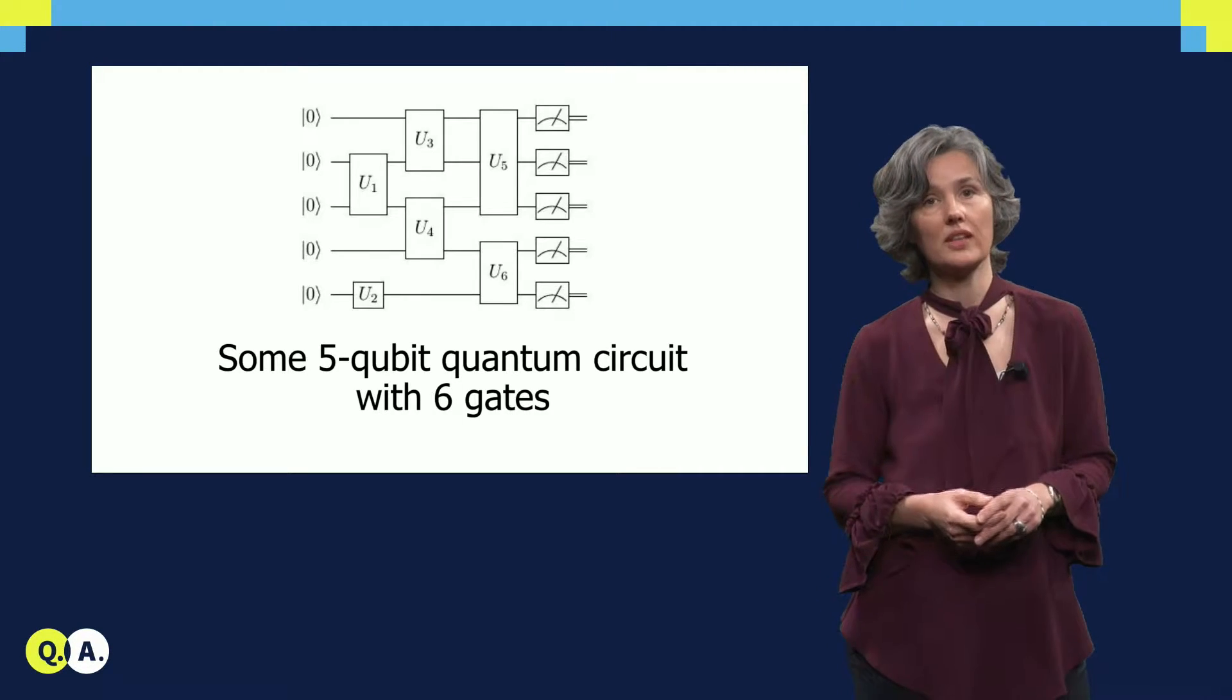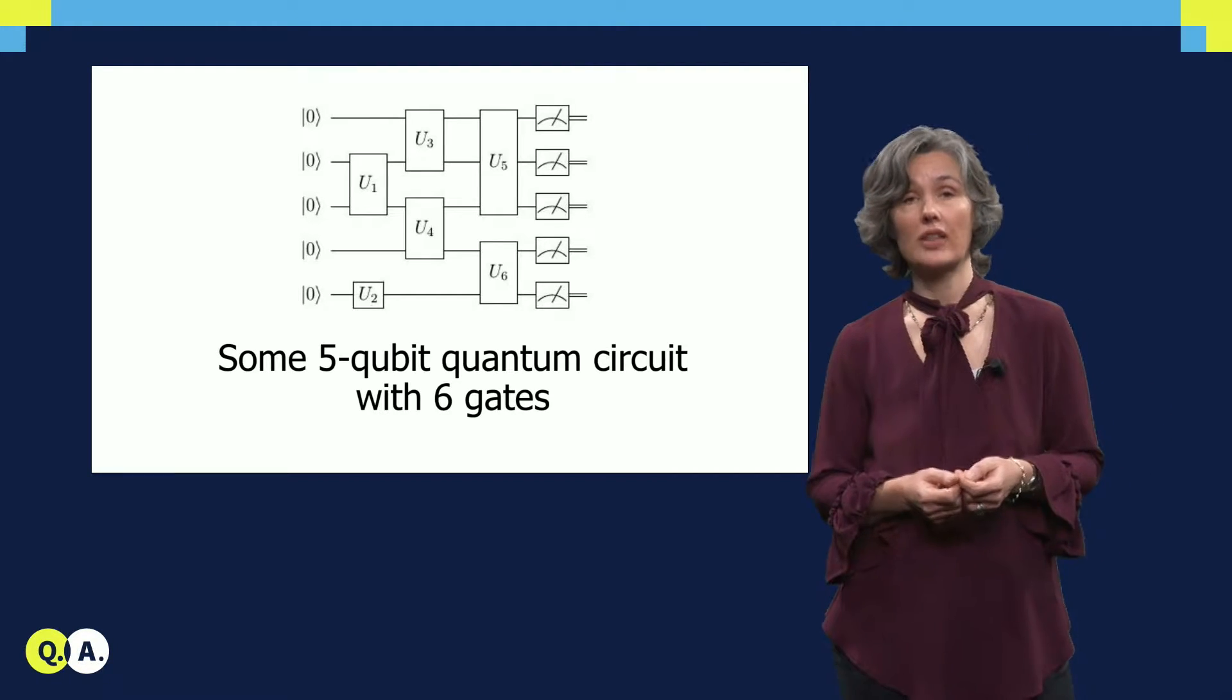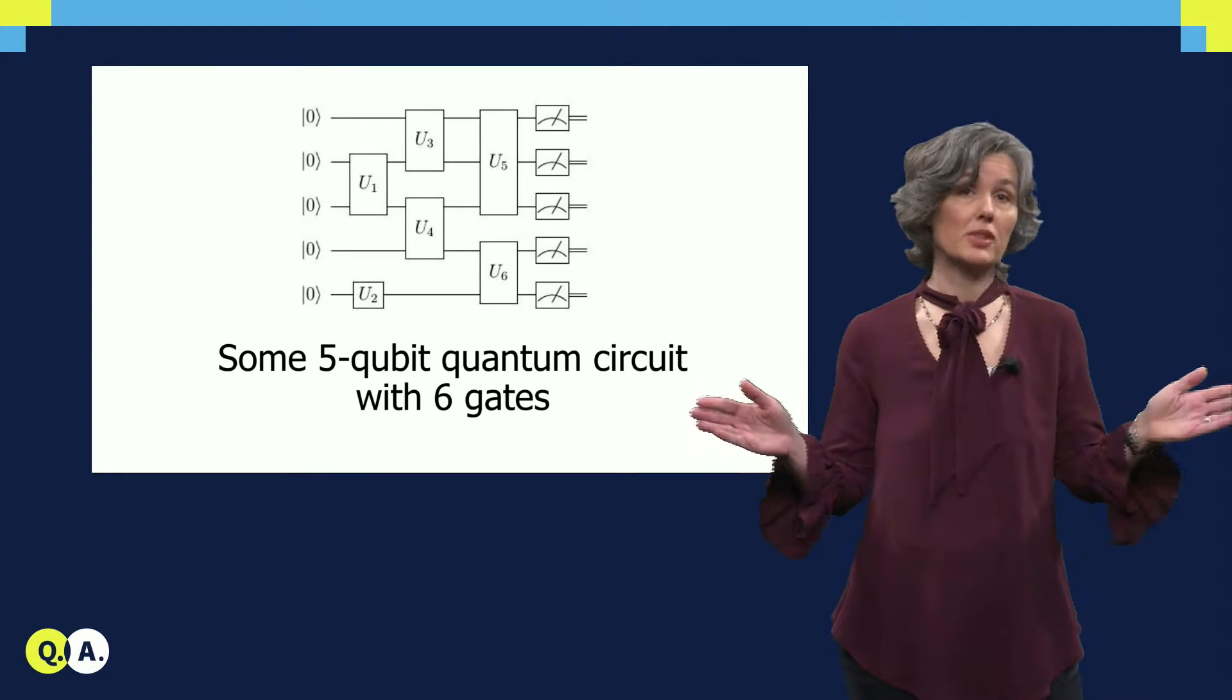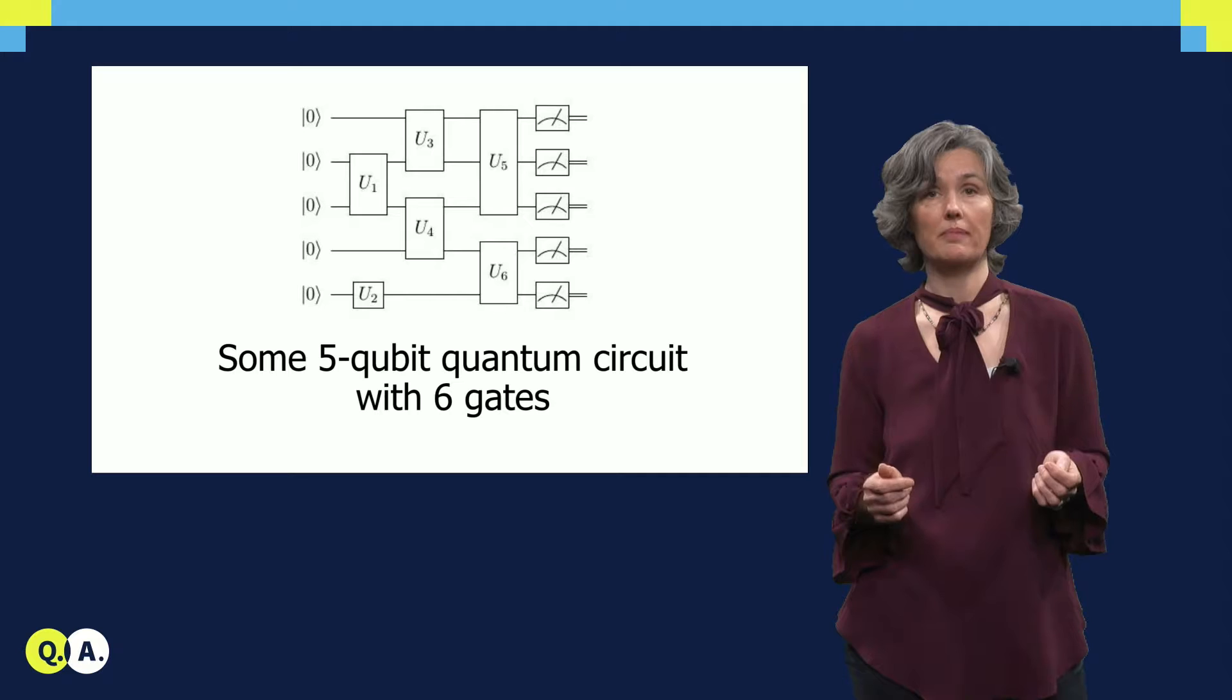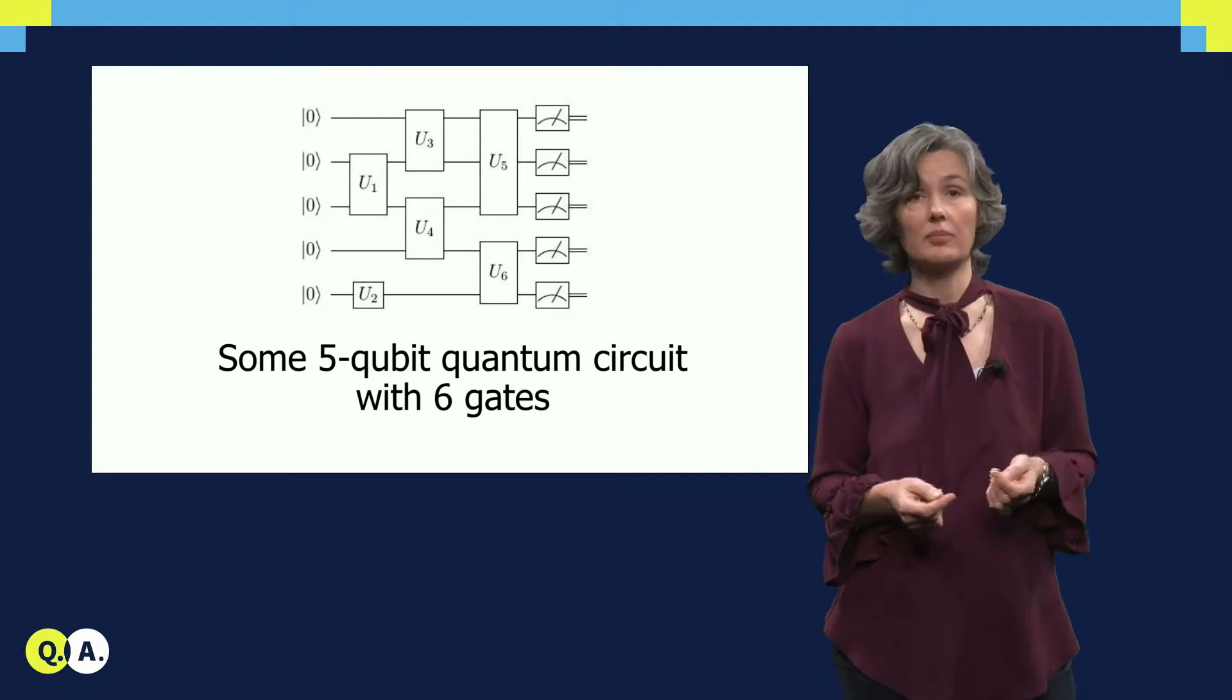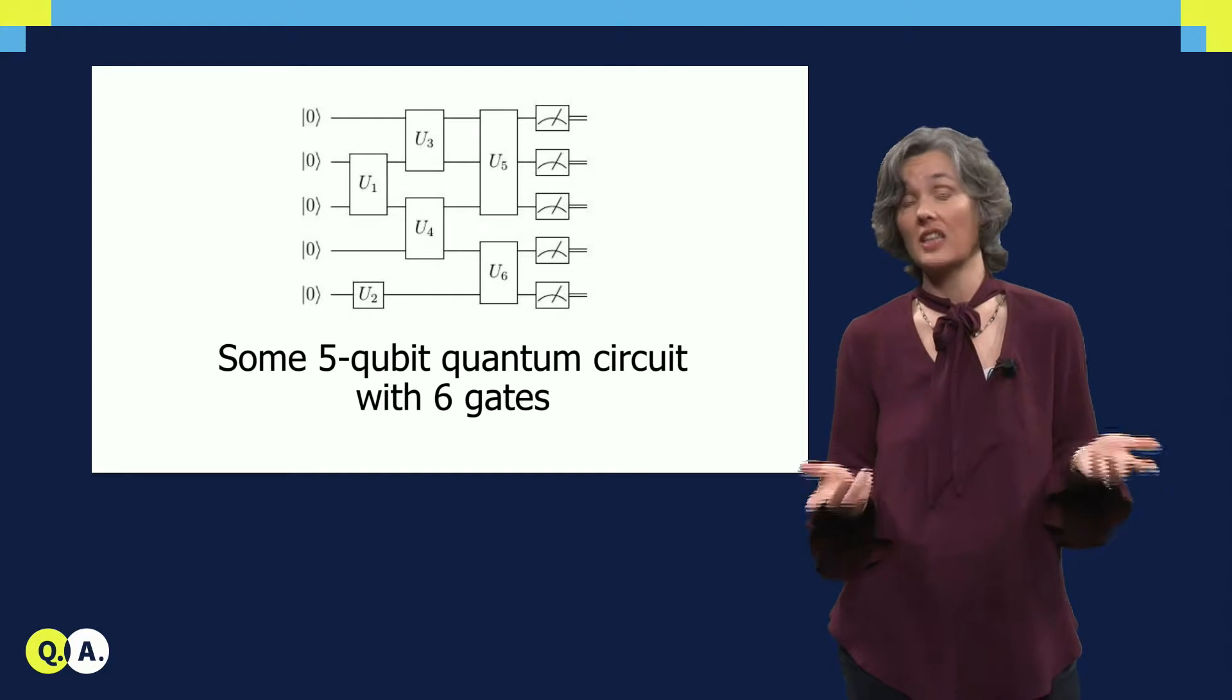The reason that quantum error correction is important is that we want quantum computers to do large computations. Such a computation, or a quantum circuit, breaks down into many steps, namely single and two qubit gates, and the measurements of all the qubits at the end. But when each gate fails to operate properly with some probability, then these failures will accumulate, leading to a final answer which cannot be trusted. And the more gates in the circuit, the higher the chance that the final outcome will be essentially garbage.